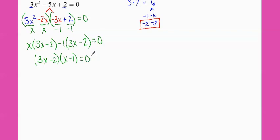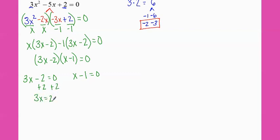Now I'm going to bring down my equal zero to all my steps — it's just easier to do it afterwards so it doesn't get in the way. Now I have two things being multiplied that equal zero, so I'm going to split them up: three x minus two equals zero, and x minus one equals zero. To solve: add two to both sides, three x equals two, divide by three — x equals two thirds. And for the other, add one — x equals one.